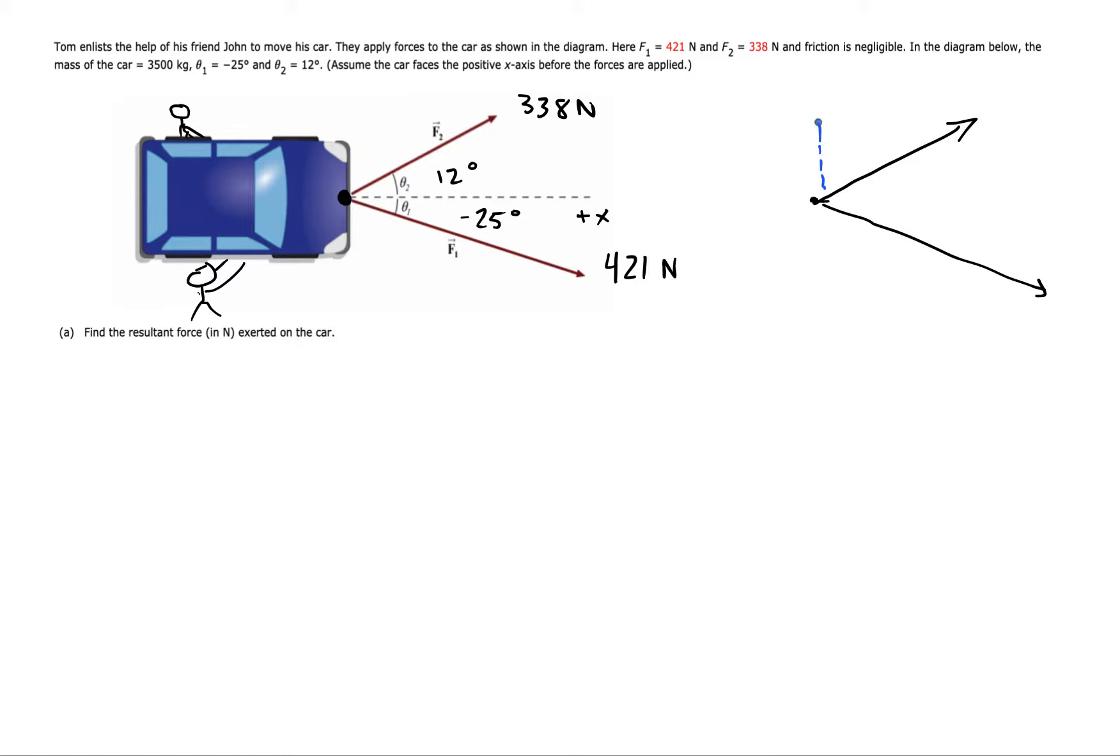We'll break down F2 into a horizontal and vertical which would be F2x and F2y, and do the same thing for F1. We'll have F1x and F1y. So F1x will be F1 cos theta 1, F1y will be F1 sine theta 1, F2x goes with cosine, and F2y will go with sine.